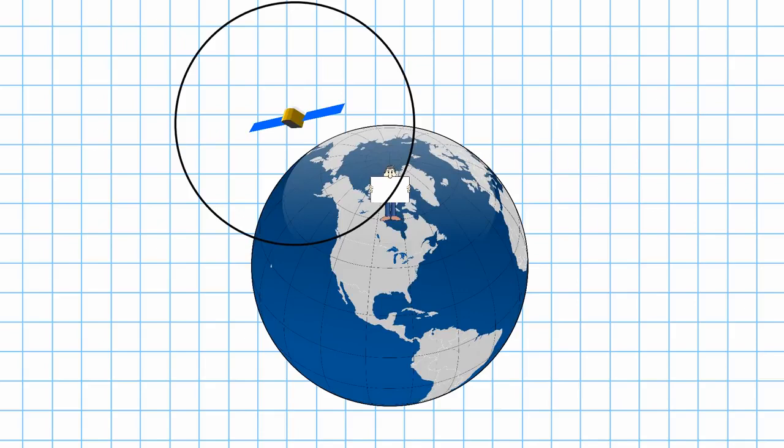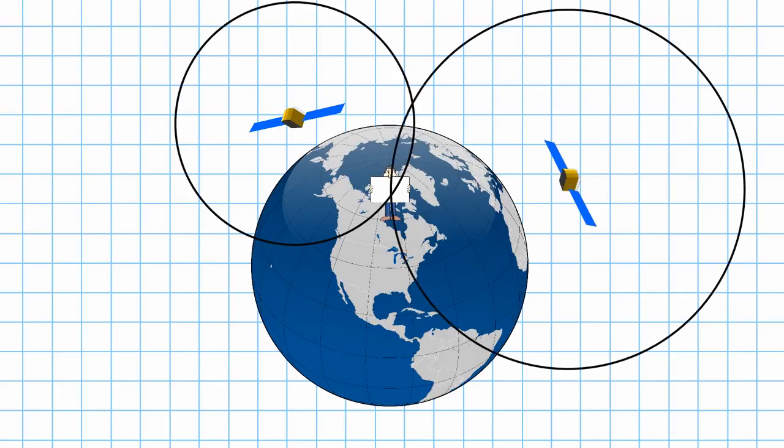Repeating the process with a second satellite gives us a second ring. The GPS knows it is at the location where the two rings intersect. You'll notice that there are two points where these circles intersect. But, if we add in the additional restraint that the position has to be near the surface of the earth, then we can eliminate one of those points.